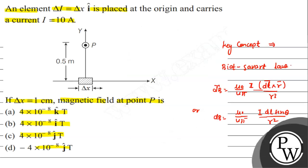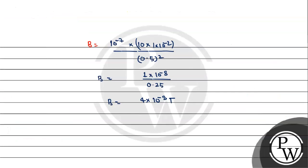For the direction, we use the right-hand rule. Point the thumb in the direction of current along the x-axis. The magnetic field at point P will be perpendicular to both the current and position vector, pointing in the k̂ direction using the right-hand rule.